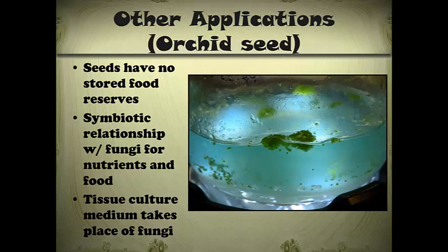Orchid seed is our first example. You cannot grow orchids from seed normally — you can't sow orchid seed in a pot and watch it grow because orchid seeds have no stored food reserves; they have nothing to power the germination process. In nature, they have a symbiotic relationship with a fungus that provides nutrients and food for the seed. We don't have a way to get that fungus when growing orchid seed ourselves, so the answer is tissue culture, where the medium takes the place of the fungus by containing the sugars and nutrients those seeds need to germinate.